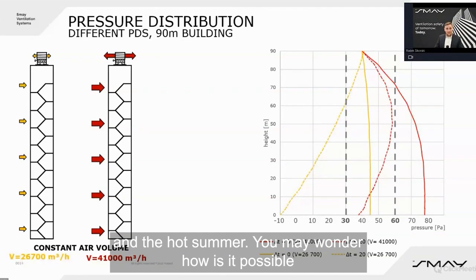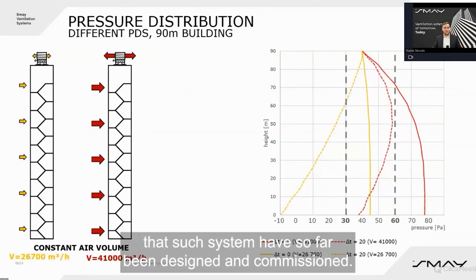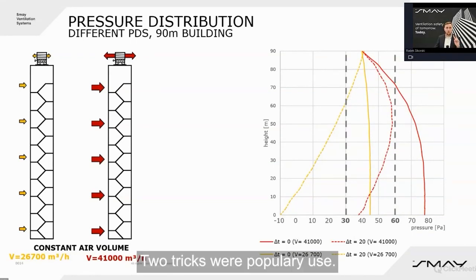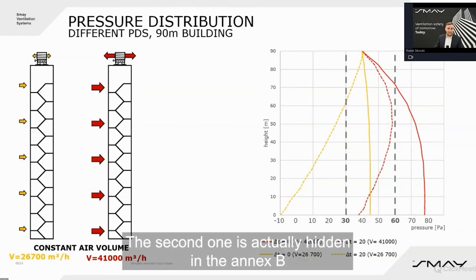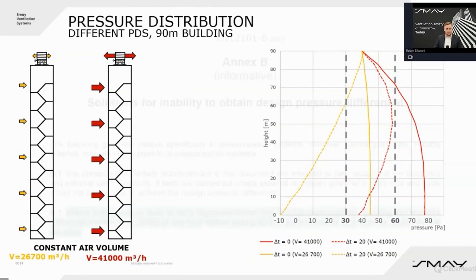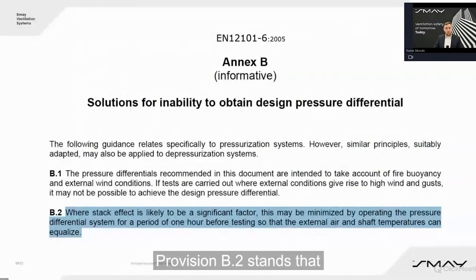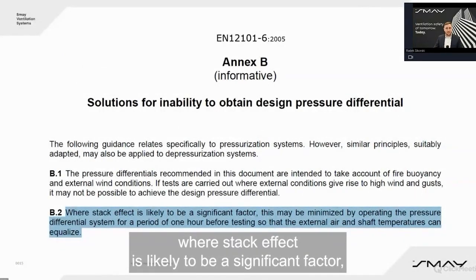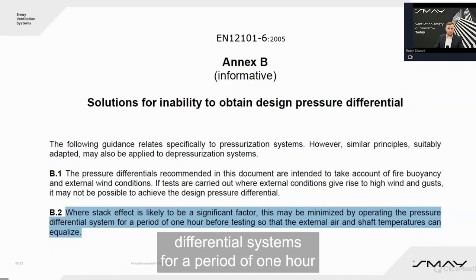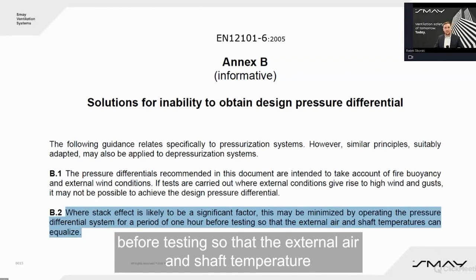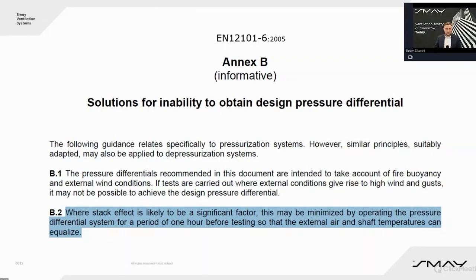You may wonder how such systems have so far been designed and commissioned. Two tricks were commonly used. Firstly, there was an unwritten rule that tests were never performed in winter or summer. The second is hidden in Annex B of the old standard 12.1.1.6: Provision B2 states that where stack effect is likely to be a significant factor, it may be minimized by operating the pressure differential system for one hour before testing, so that external air and shaft temperatures can equalize.